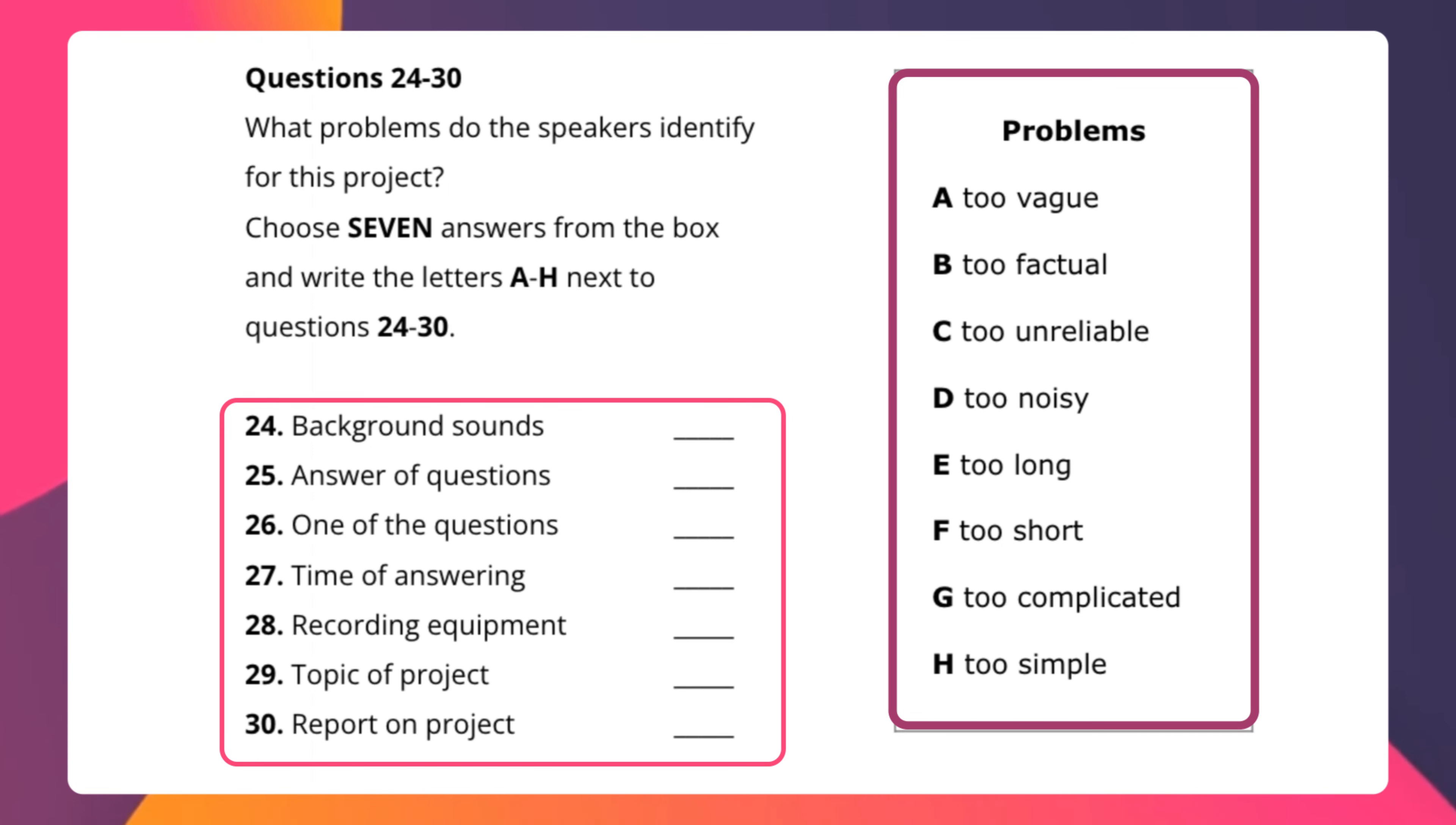You will be eliminating one answer or you will not be including one answer from the list of options. We have the instruction which clearly says that you need to select seven answers from the box and write the letters A to H. A to H is actually we have eight answers and we will be eliminating one as I said before.